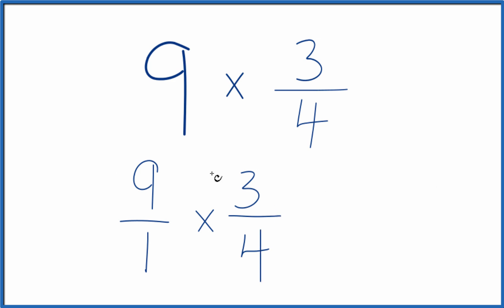So when we're multiplying fractions here, we multiply the numerators, then the denominators. 9 times 3 is 27. 1 times 4, that's 4.